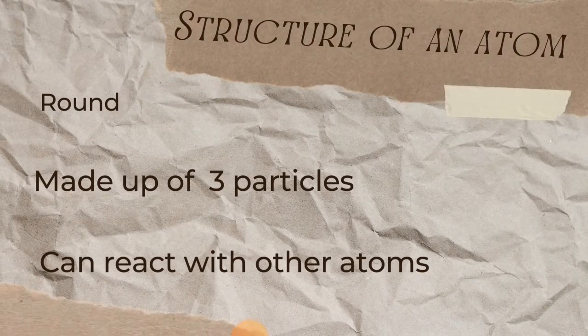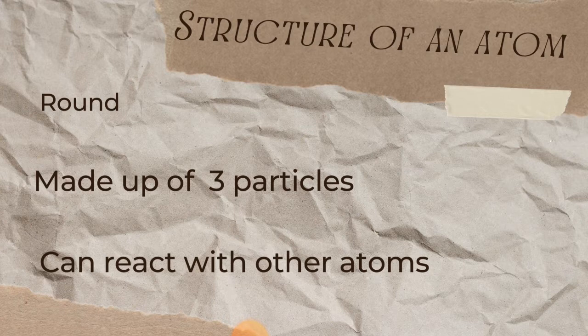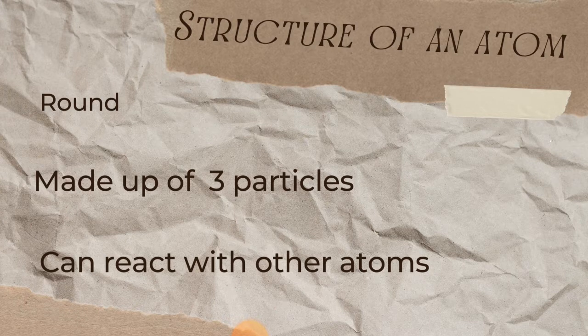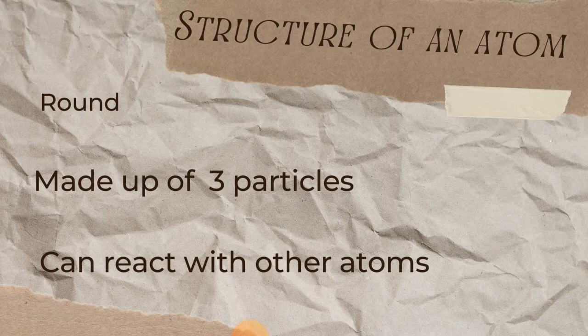So in looking at the structure of an atom, we notice that atoms are mostly round. Yes, they are mostly presented as round. And they are made up of three particles, two on the inside of the atom and one on the outside of the nucleus of the atom.